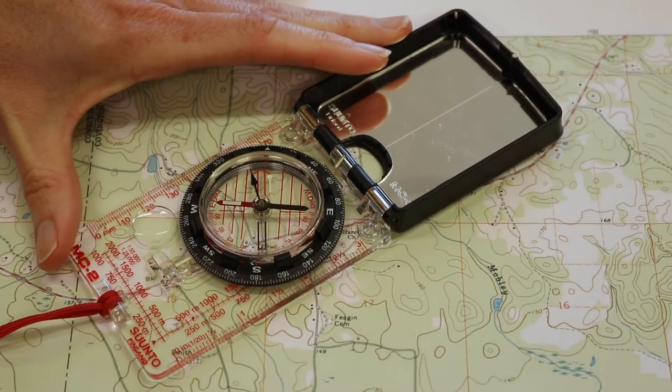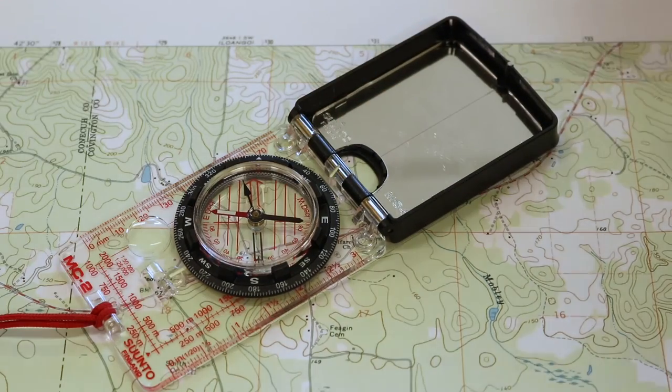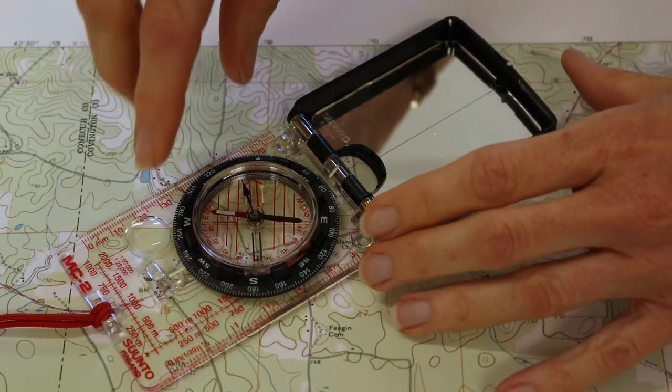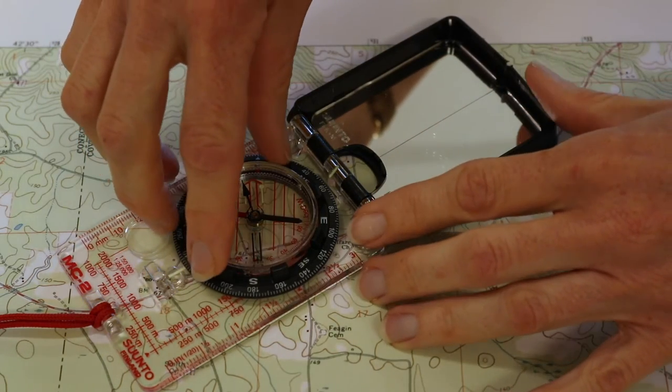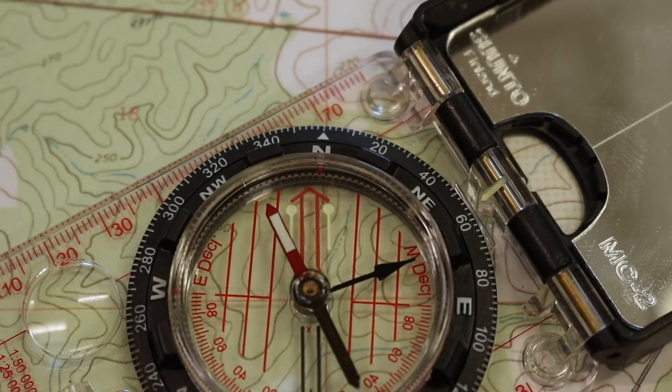Next, turn the bezel on your compass until the orienting arrow points north and lies parallel with the nearest north-south meridian. Your compass is now set.